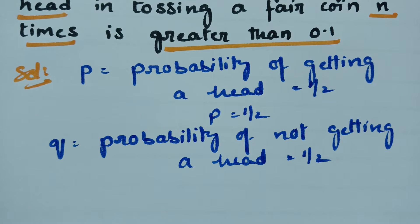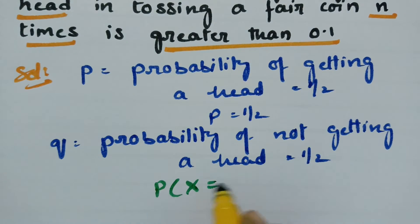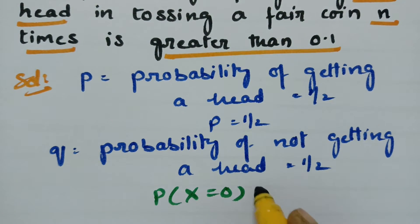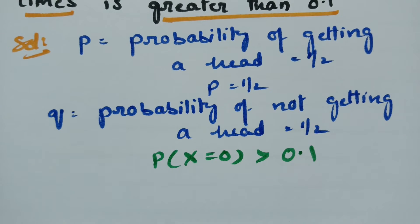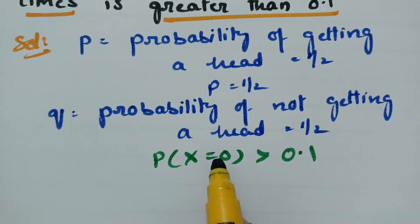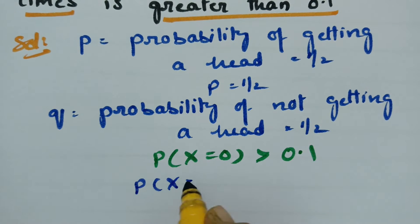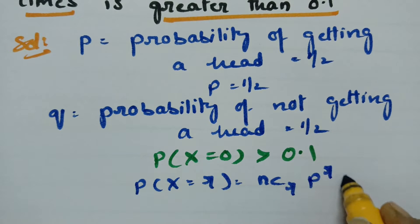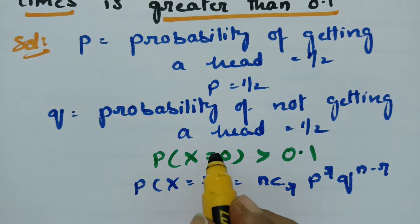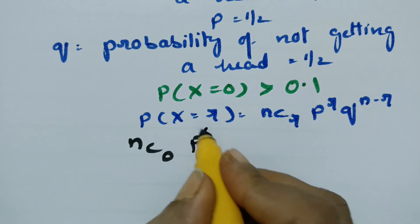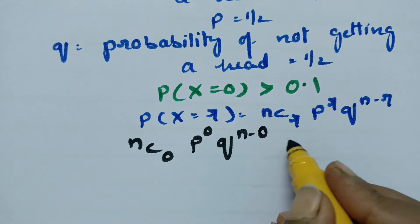There is a little logic here. The probability of getting no heads when a fair coin is tossed n times must be greater than 0.1. We have to find the maximum number of n. According to the binomial distribution formula, P(X = r) = nCr × P^r × Q^(n−r). Applying this with r = 0, we get nC0 × P^0 × Q^(n−0) greater than 0.1.